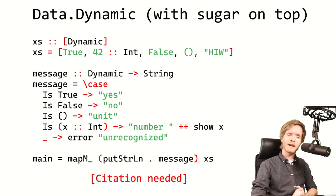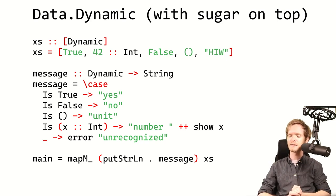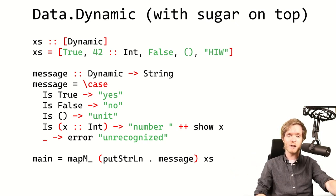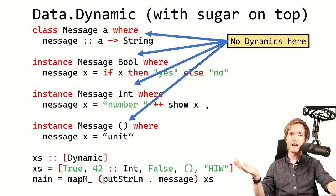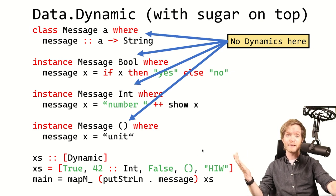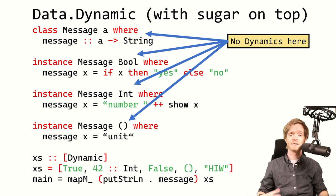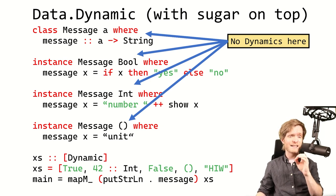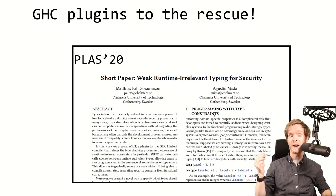Another caveat is that in Haskell, a lot of what we do uses type classes. Being able to make things Dynamic doesn't really help if you apply it to a type class and it doesn't work. Here's an example: we have a type class with instances for Bool, Int, and Unit — but there's no instance for Dynamic. So if you call this message function on a list of Dynamics, it will just complain that there's no instance for message Dynamic. We'd like to be able to work with type classes as well.